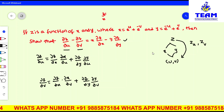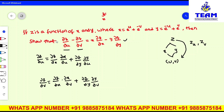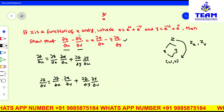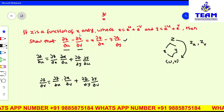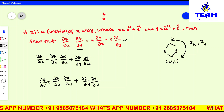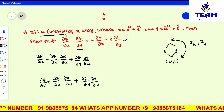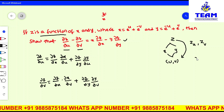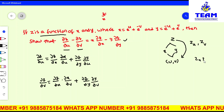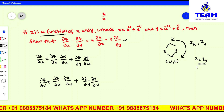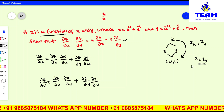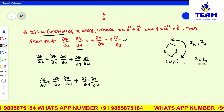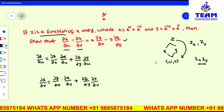Now, can you find out ∂z/∂x? Are they giving z explicitly as some function of x and y, like x² + y²? No. They are just saying z is a function of x and y. So here, ∂z/∂x and ∂z/∂y are unknown. You cannot find these values — you have to write ∂z/∂x as ∂z/∂x.